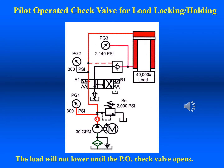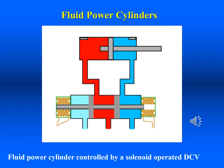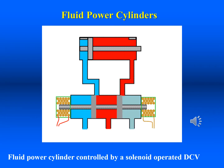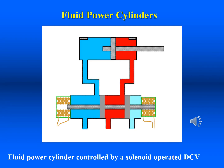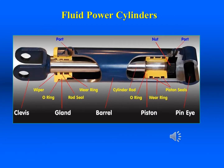Fluid power cylinders are normally controlled by directional control valves. Most directional control valves used in industry are actuated by an electrical device called a solenoid. Electrical energy is sent to the solenoid, which produces a linear mechanical force. This linear force causes the spool in the DCV to move. This picture represents a typical double-acting or differential cylinder. A double-acting cylinder extends and retracts with pressurized fluid. The term differential comes from the fact that there is a difference of area from one side of the piston to the next.